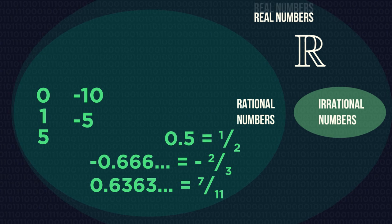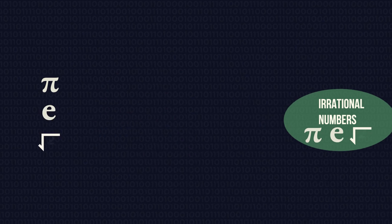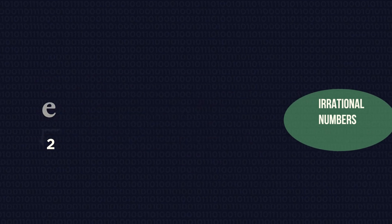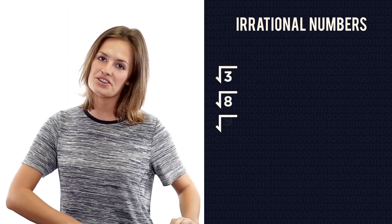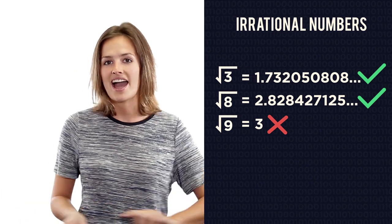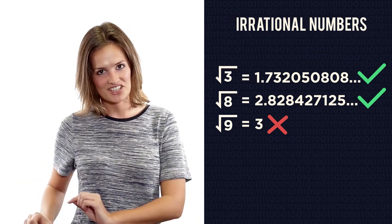Decimals that do not repeat are irrational. Some well-known examples are pi, e, and square root 2. So many square roots and cube roots are irrational. If the decimal places go on forever without repeating, then they are irrational.